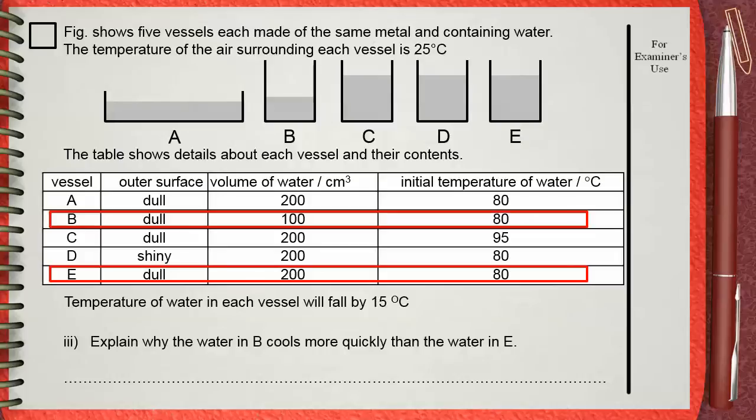The smaller amount of water carries less heat energy, even though the temperature is the same, so it will lose it in shorter time. B has less liquid, so has a smaller amount of heat to lose. This is why B will cool more quickly than E.